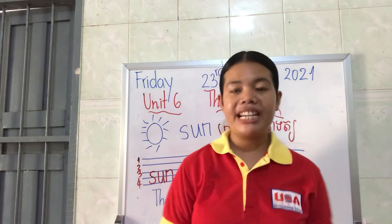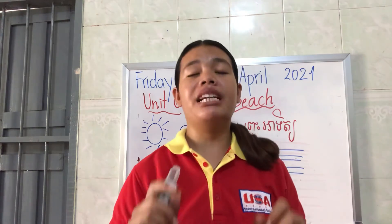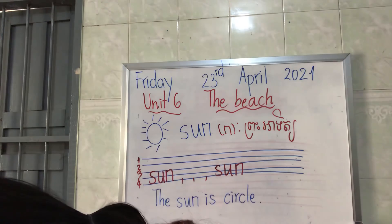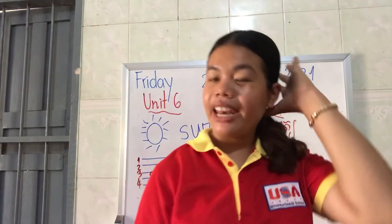So here is our lesson today — the word 'sun.' I know that you can spell it very well. After watching this video, please spell the word 'sun' and make a sentence with the word 'sun' for me. I would like to talk in Khmer now. The sun is circled this morning. So see you on Tuesday — goodbye!